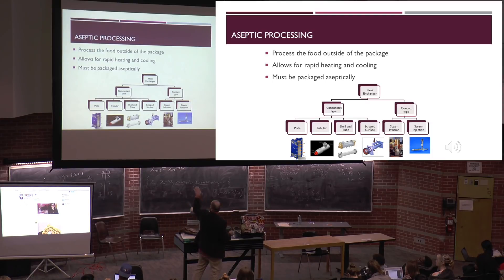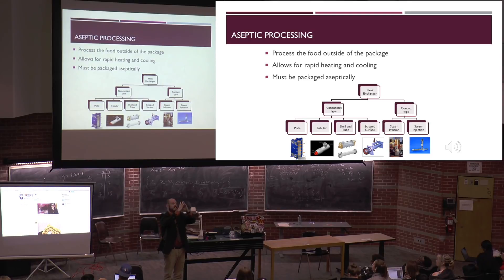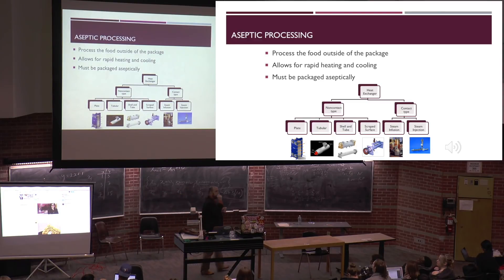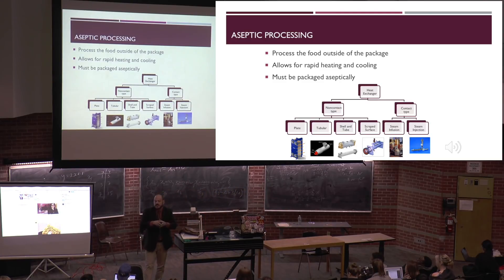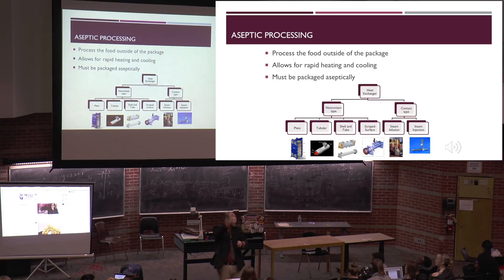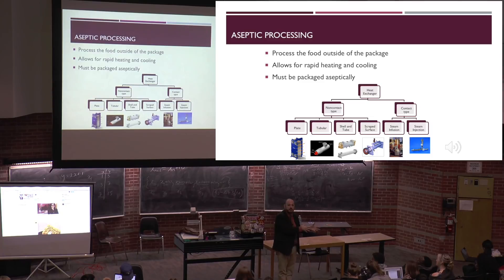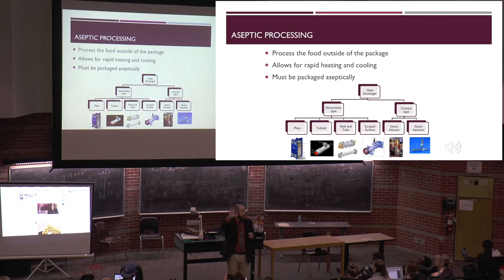The tubular heat exchanger is just a tube with an outer tube - typically the food goes through the middle, heat is on the outside, and heat is transferred through that surface area. When we talk about contact type, that means steam comes into contact with the food directly - steam is bubbled into that food. We have to be aware that steam will condense within that food, changing the water activity because water content goes up and water activity goes up. So we have to be prepared to either allow for that dilution, which typically we don't want.